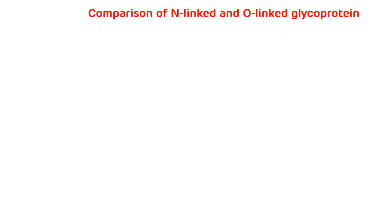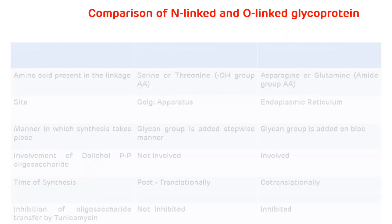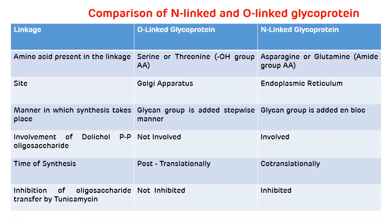Now we will see the difference between N-linked and O-linked glycoproteins. The first difference is related to the amino acid present in the linkage. In O-linked glycoproteins, hydroxyl group-containing amino acids are present — examples are serine and threonine. While in N-linked glycoproteins, amide group-containing amino acids are present — examples are asparagine and glutamine.